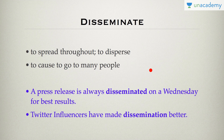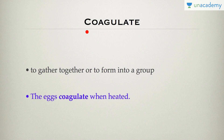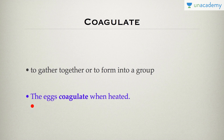Dissemination means to disperse or to cause something to reach many people. This word is commonly used in PR firms. Next is coagulate. Used many times in chemistry, it means to gather together or to form a group. For example, when heated, the eggs coagulate.